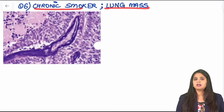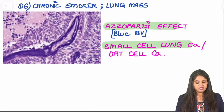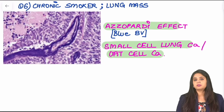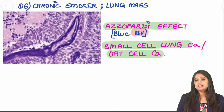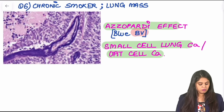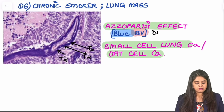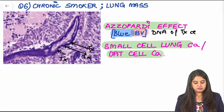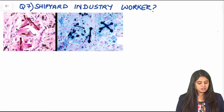Now moving to five images. First: a chronic smoker with a lung mass. This is a classical photo of the Azzopardi effect, indicating small cell lung cancer or oat cell carcinoma. The Azzopardi effect: a blood vessel that should appear blood-red instead appears blue, because tumor cells are breaking down and their DNA is attaching onto the blood vessel wall. This DNA from cancer cells makes the blood vessel appear blue.